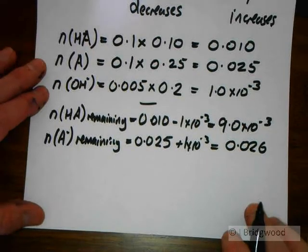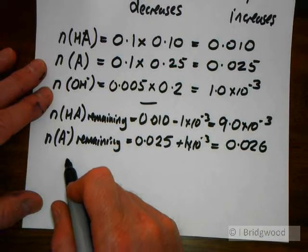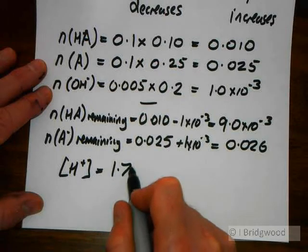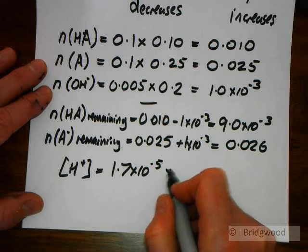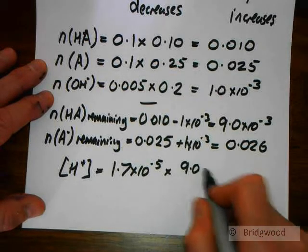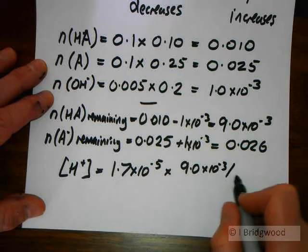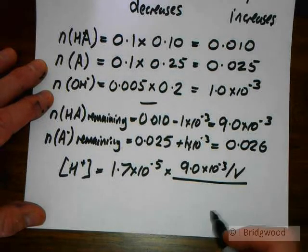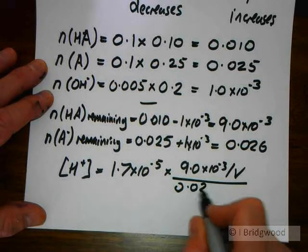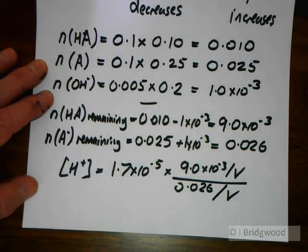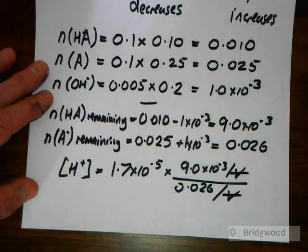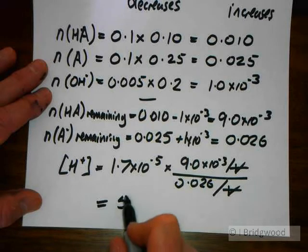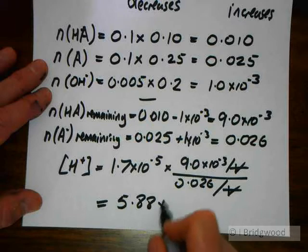So, in the same way that we had before, we can work out the concentration of hydrogen ions: Ka multiplied by the concentration of the acid, which is going to be 9.0 times 10 to the minus 3 over volume, which of course is 105, and the concentration of our A⁻ 0.026 over V. And notice the volumes can cancel, which is why I wasn't too worried about those. That gives me a value of, if I do the calculation, 5.88 times 10 to the minus 6.